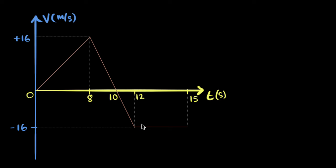So let's see what this graph is telling us. Imagine this is a graph of a car. At time t equals zero, whenever we started our stop clock, the car's velocity was zero. Then notice there's a straight line — it climbs all the way to 16. That means for the next eight seconds, the velocity of this car is increasing, all the way until it reaches 16 meters per second.